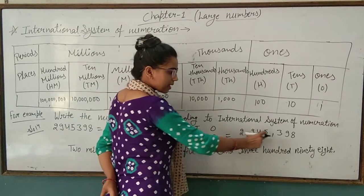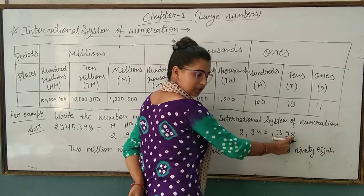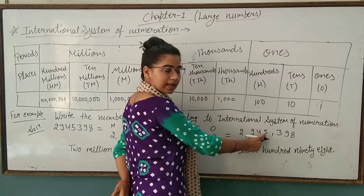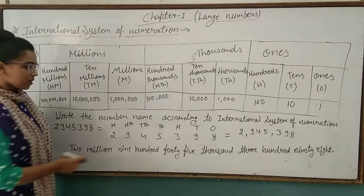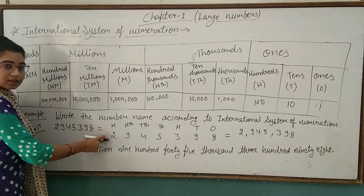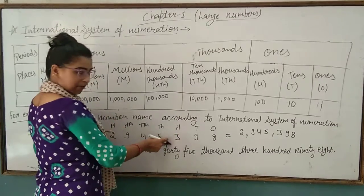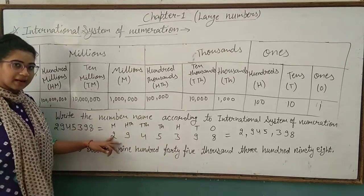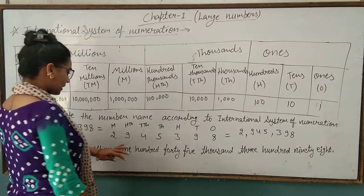1 million place, then 1 thousand place, then 1 ones place - means 3 digits here, 3 digits here, and 1 digit here. Now we start reading. We put commas from left side and read the number from right side.